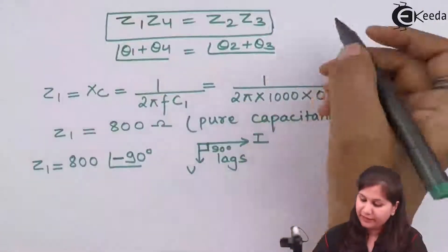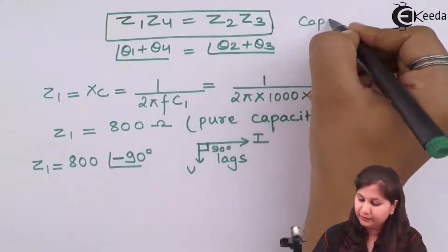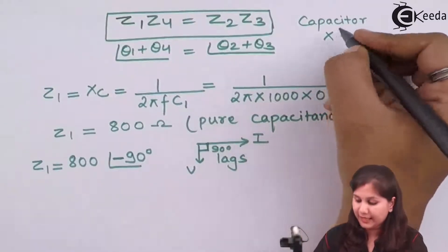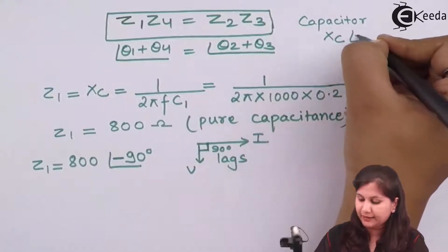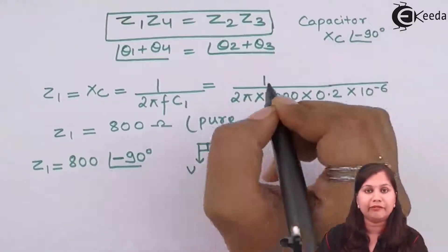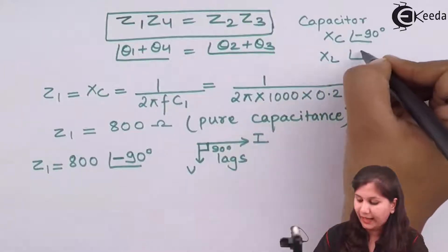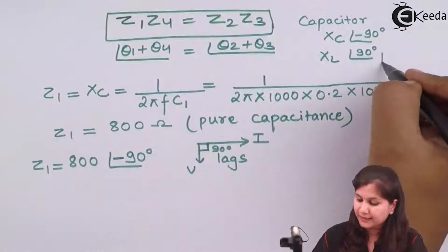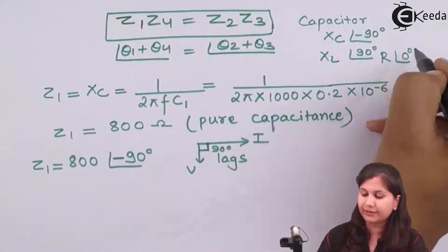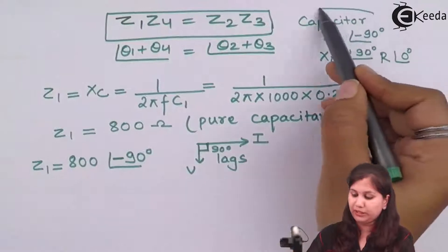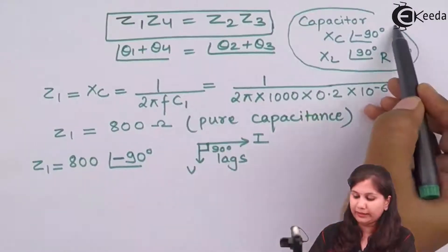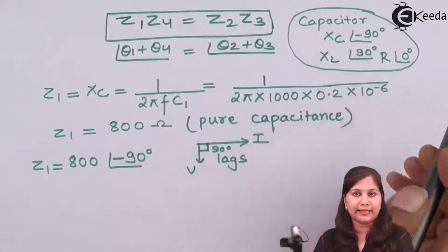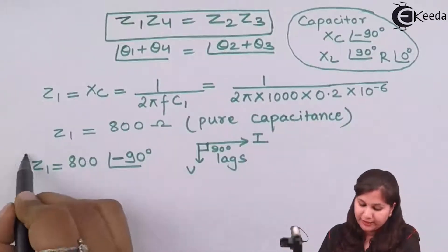In general, for a capacitor, reactance is XC and the phase angle is −90°. For an inductor, it is XL and the angle is +90°. For a resistance, it is R and the angle is 0°. This concept should be clear so you can easily write the phase angles for all three elements.